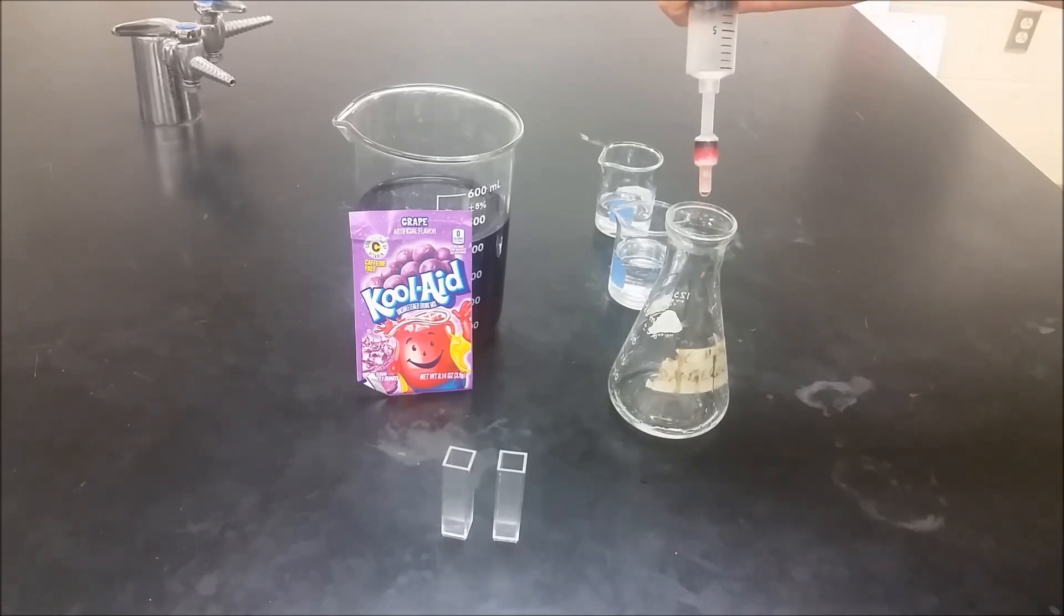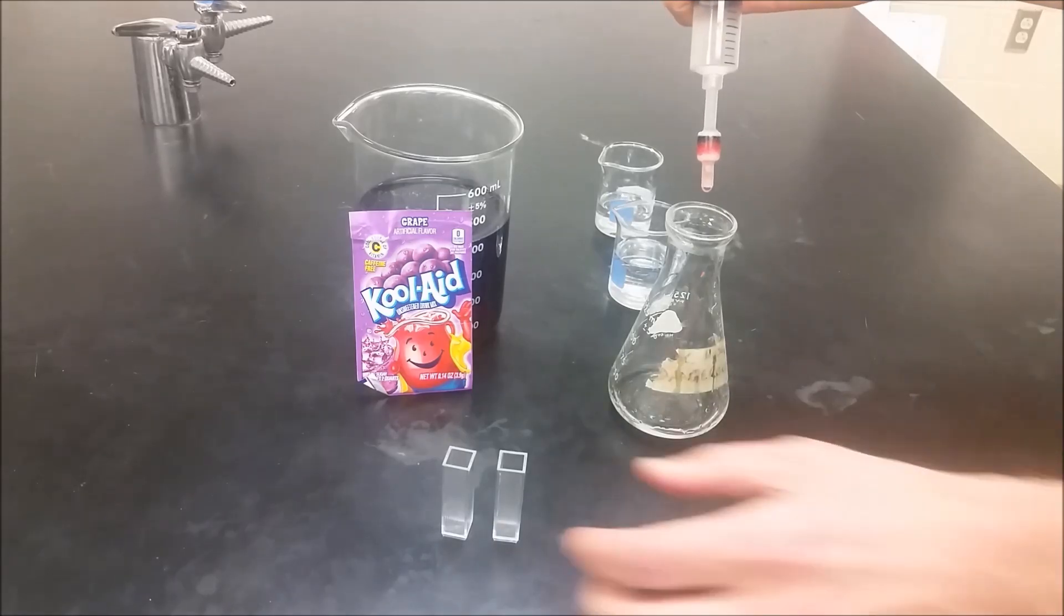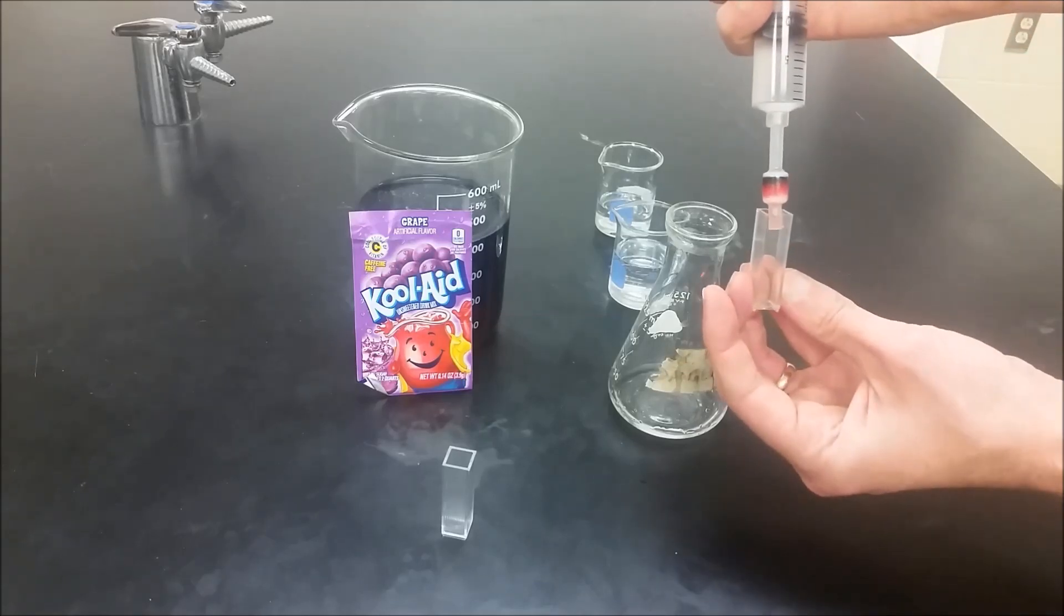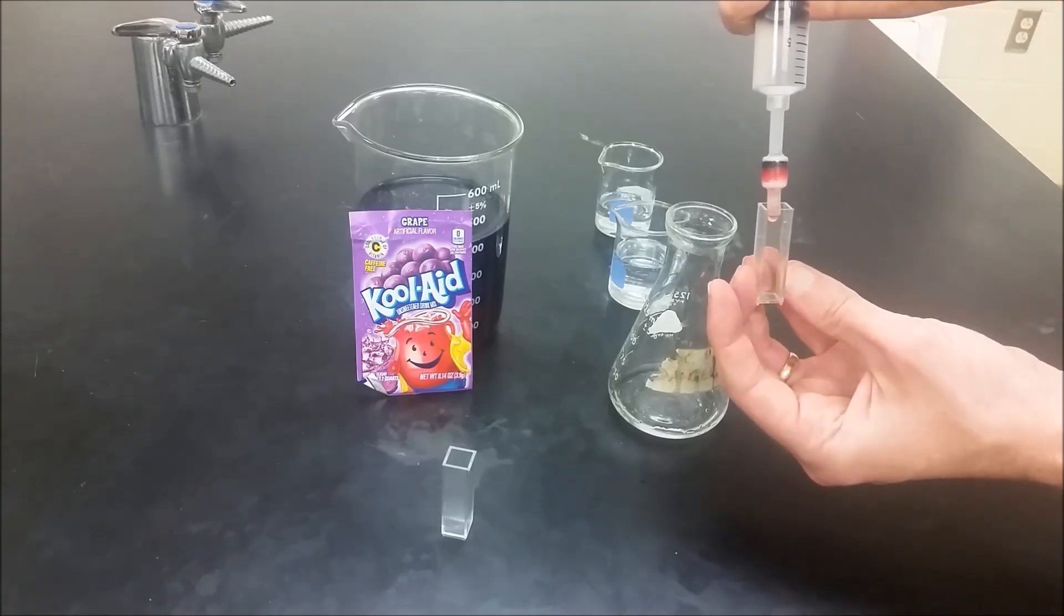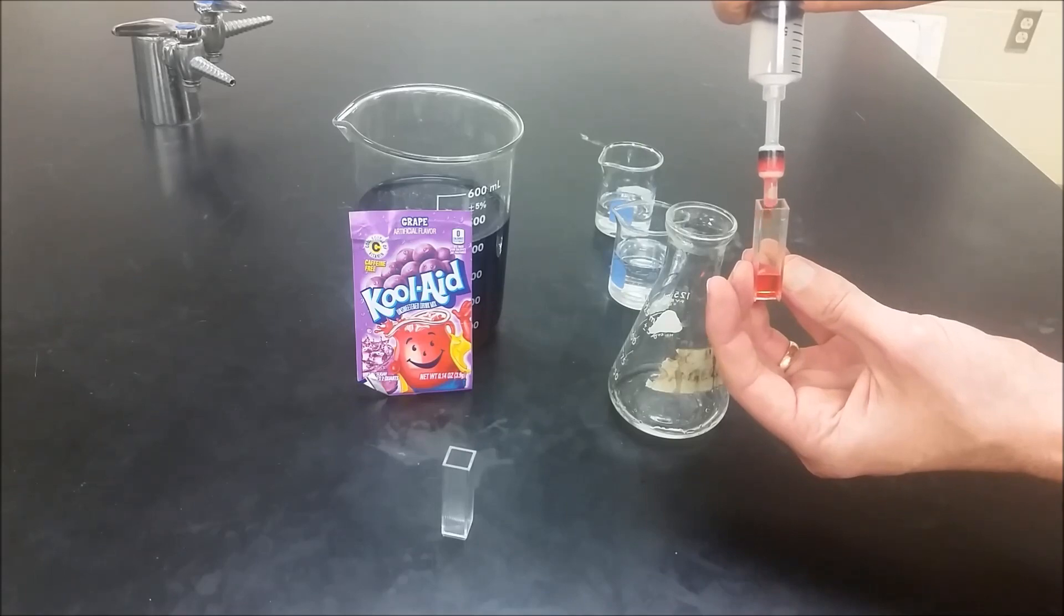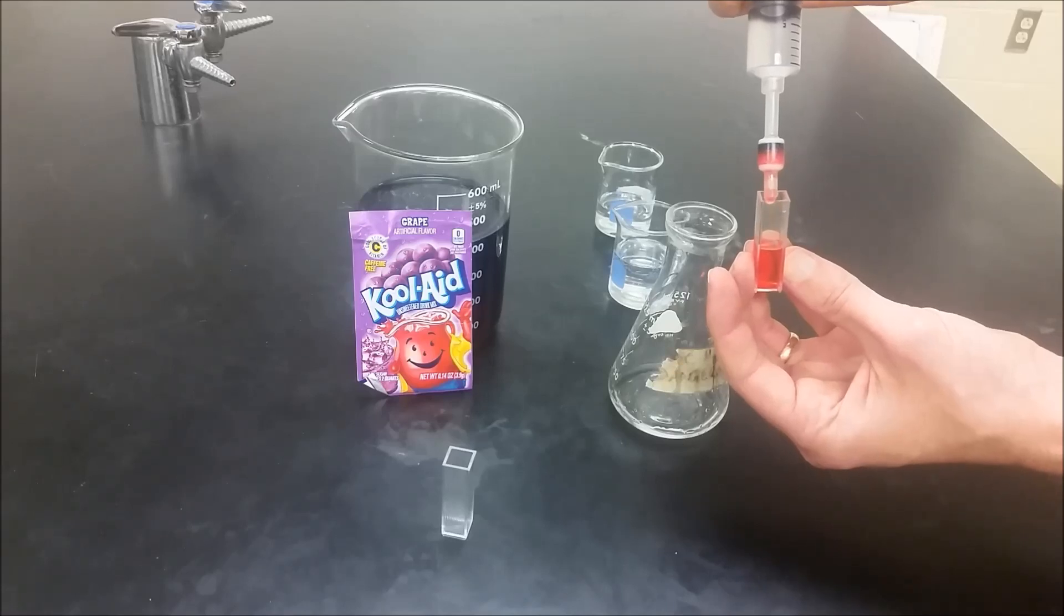Right now we're starting to get the red color coming out of the end. We can start collecting this into a cuvette. We want to collect this part early so that we get the full red and we don't get any of the other parts of the Kool-Aid. Then once we get enough of that, we'll stop collecting.